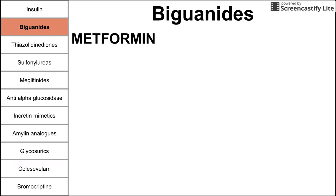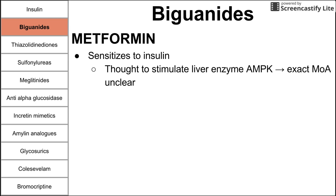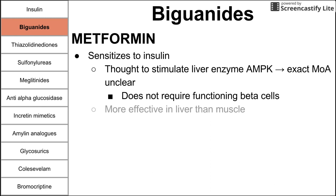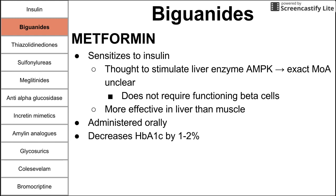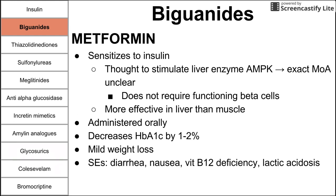Next are the biguanides. The main one is metformin, a very commonly used drug for diabetes. Metformin sensitizes to insulin by stimulating the liver enzyme AMPK. The exact mechanism is unclear but is definitely through AMPK. It does not require functioning beta cells, so it works in both DM type 1 and type 2. It's more effective in the liver than the muscle. Metformin is administered orally, decreases HbA1c by about 1 to 2%, and produces mild weight loss. Side effects include diarrhea, nausea, vitamin B12 deficiency, and — importantly — lactic acidosis.